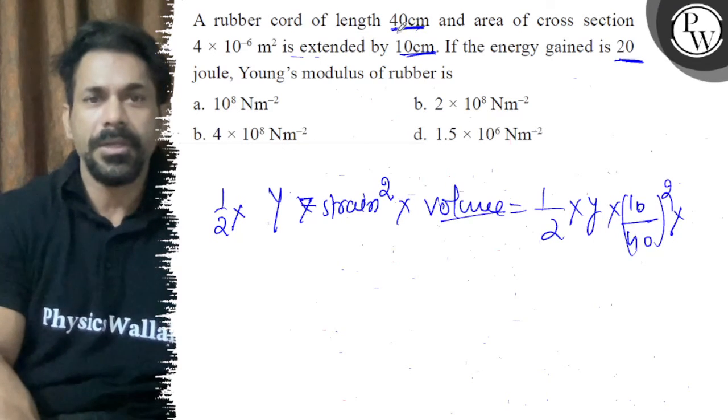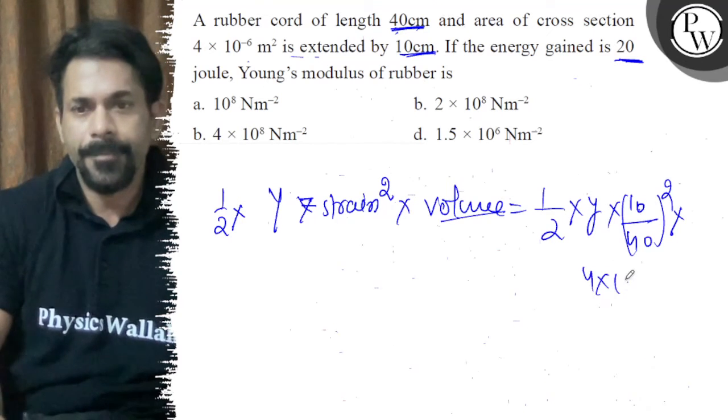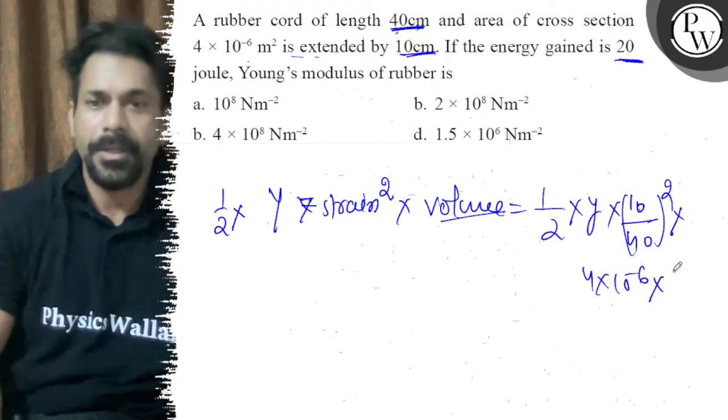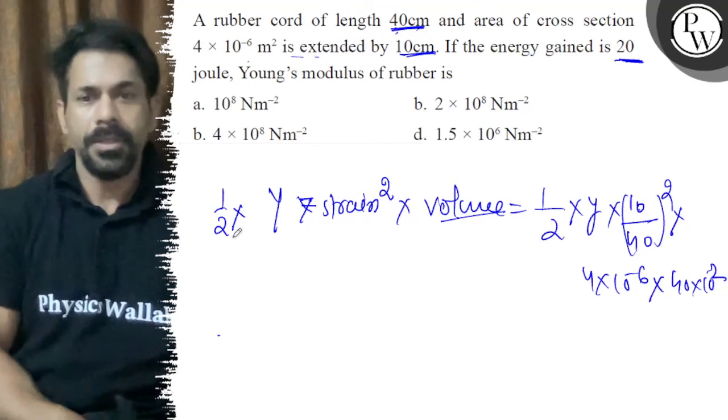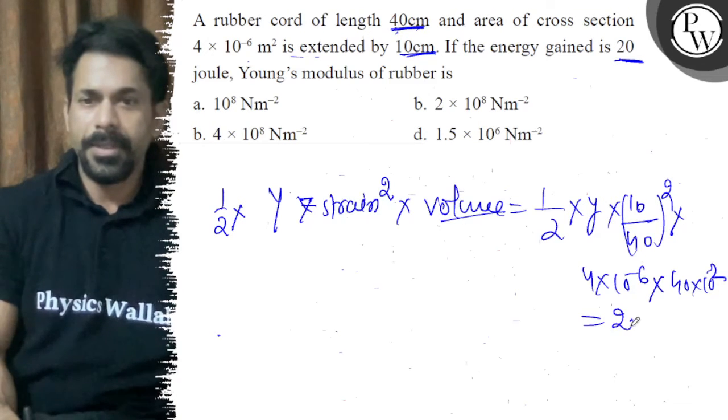Volume is 40 centimeter, 4 into 10 power minus 6 into 40 into 10 power minus 2. So that is equal to 20 joule. And this is 20 joule.